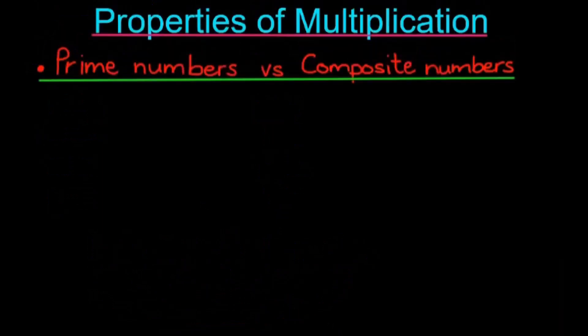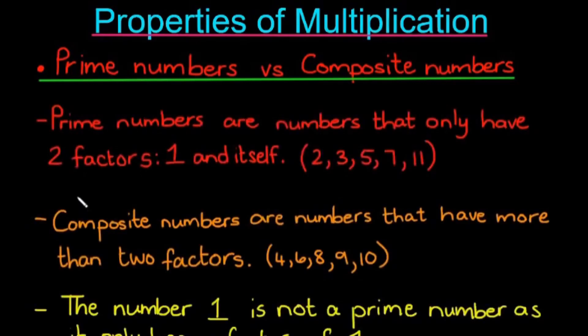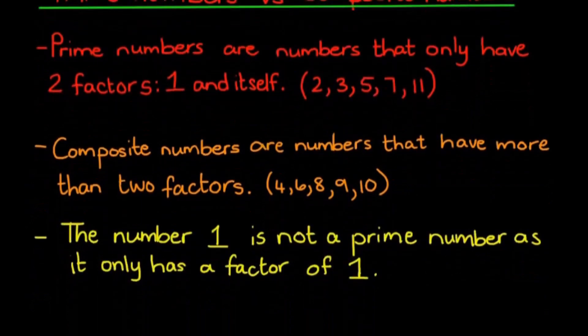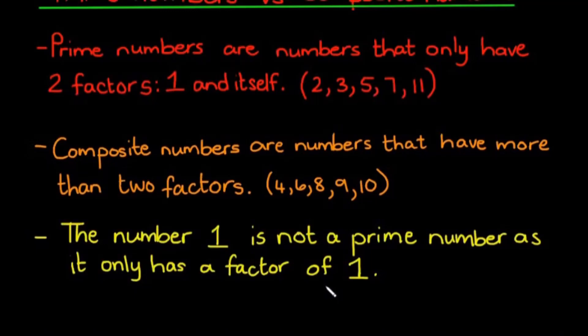Prime numbers and composite numbers. Prime numbers are numbers that only have two factors, one and itself. These are numbers like 2, 3, 5, 7, and 11. There are many more to find, but I'm just listing the first five. Composite numbers are numbers that have more than two factors, like 4, 6, 8, 9, and 10. The number 1 is not a prime number as it only has a factor of 1.